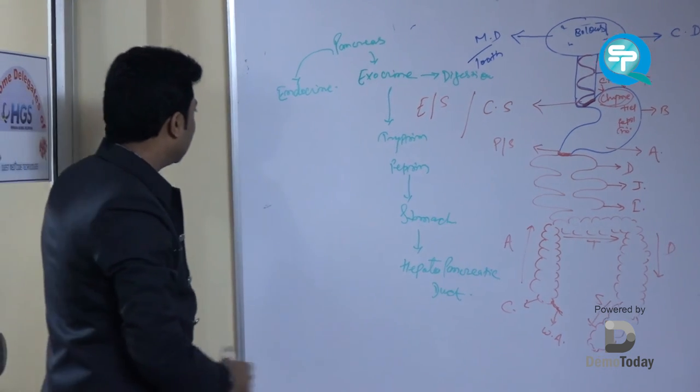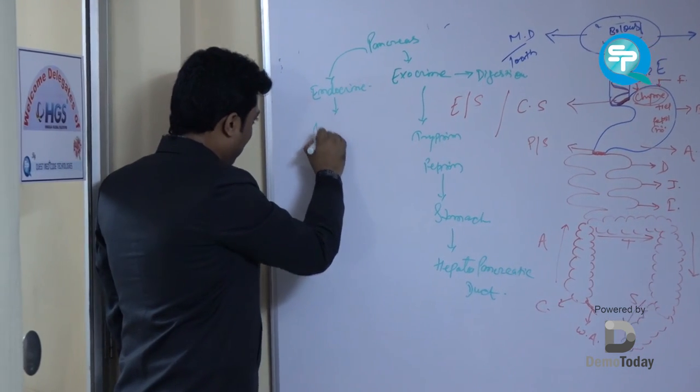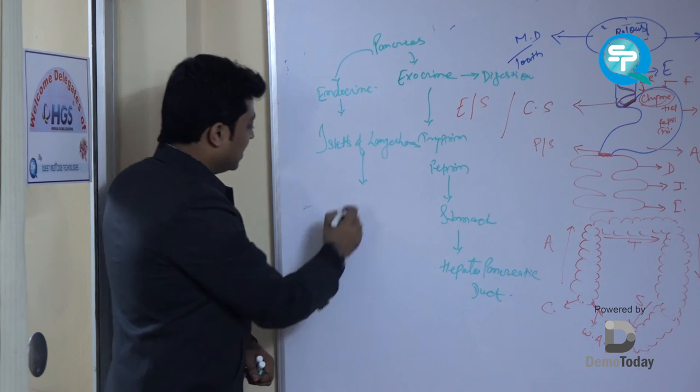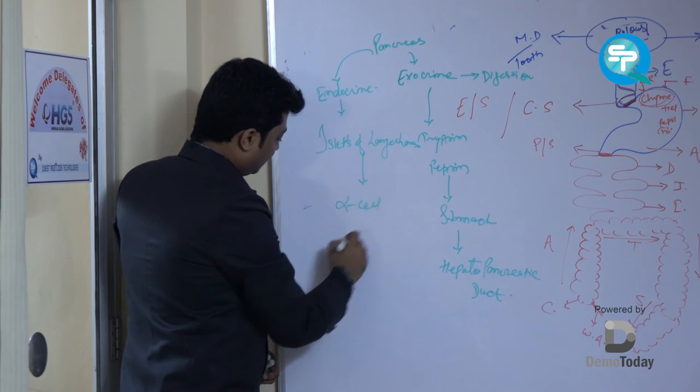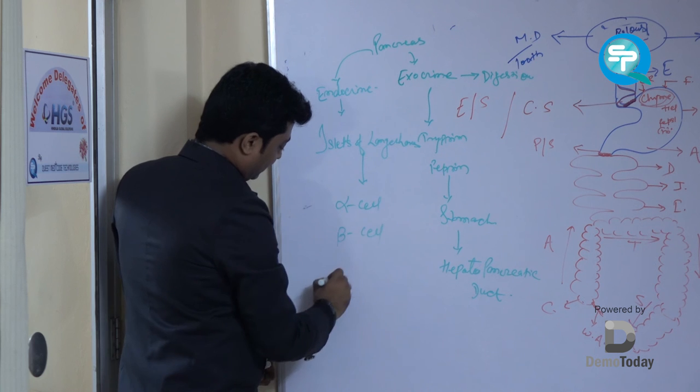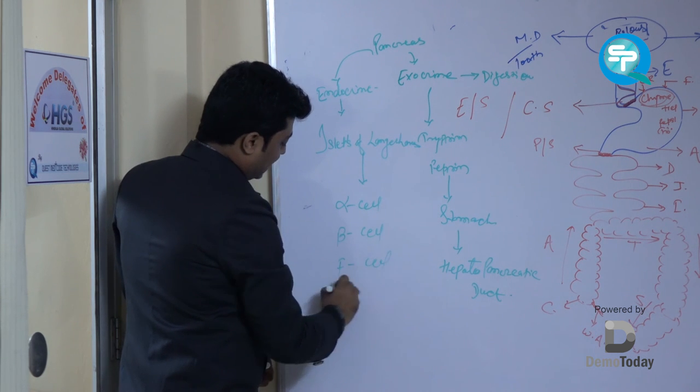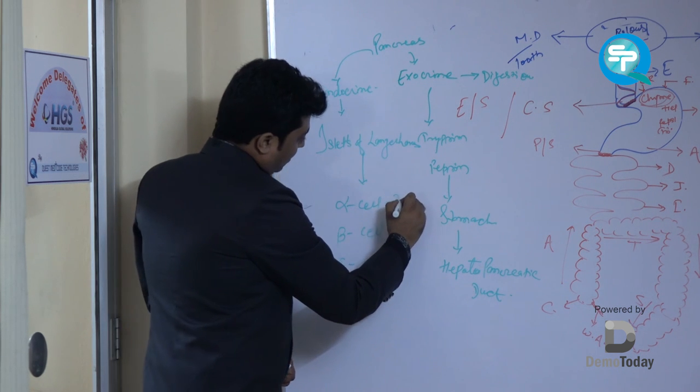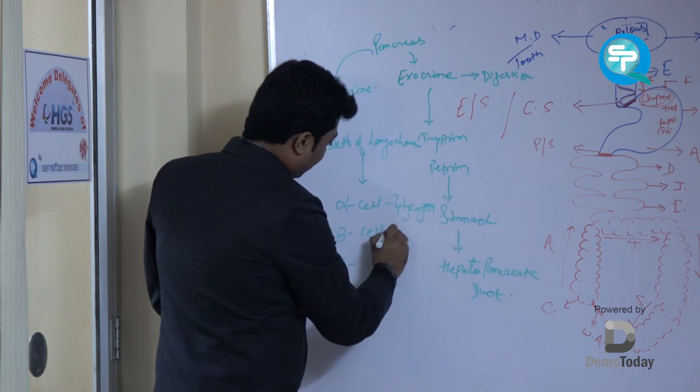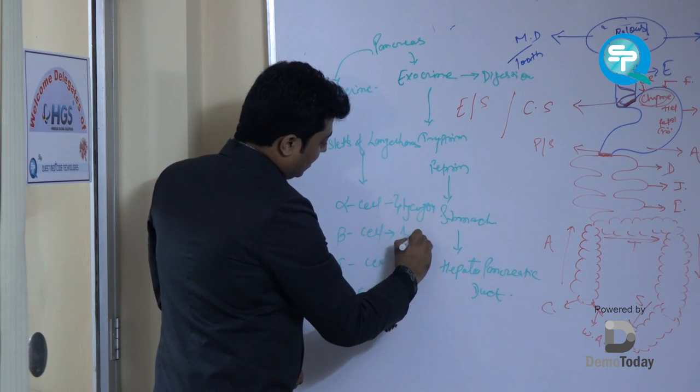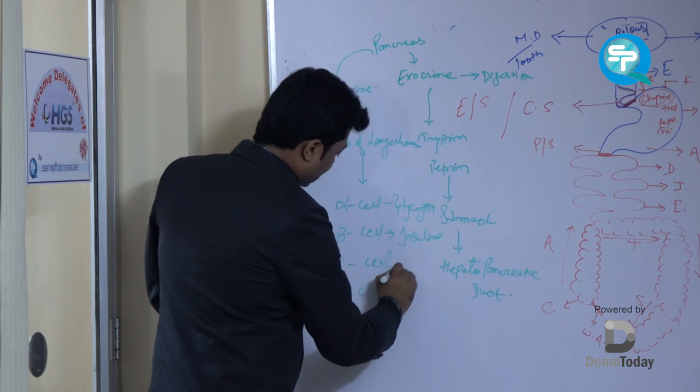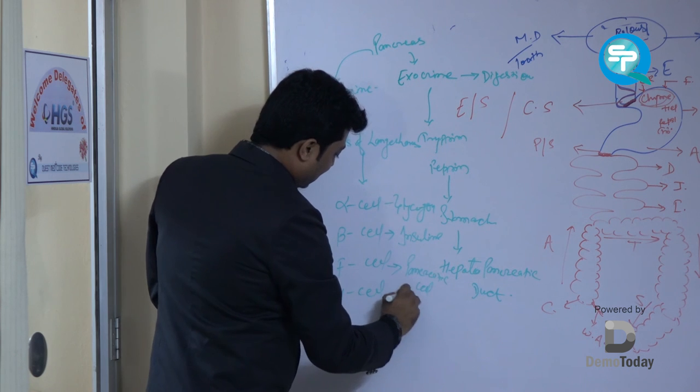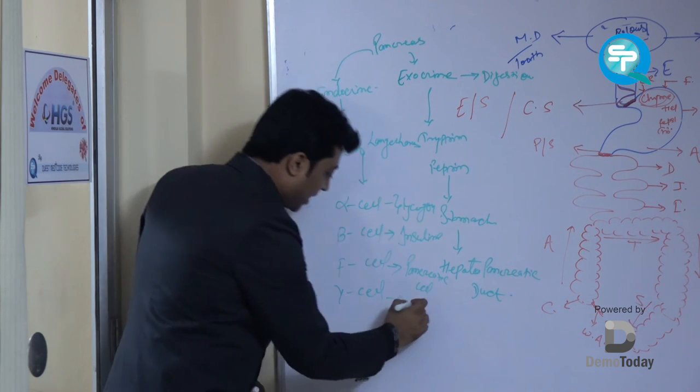Next, the endocrine part of the pancreas. It contains islets of Langerhans. The islets of Langerhans contain four types of cells. One is known as alpha cell, second is known as beta cell, next F cell and delta cell. The alpha cell secretes glucagon. The beta cell secretes insulin. The F cell secretes pancreatic polypeptide. And the delta cell secretes somatostatin.